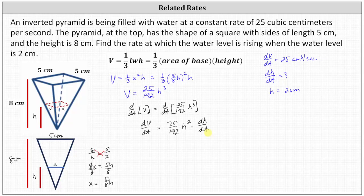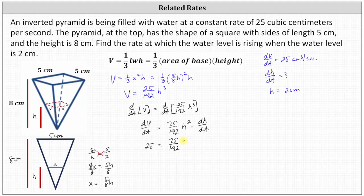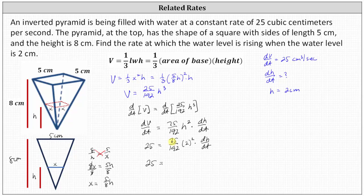We're solving for dh/dt when h equals two centimeters and dV/dt equals twenty-five cubic centimeters per second. Substituting twenty-five for dV/dt gives us twenty-five equals seventy-five over one hundred ninety-two times h squared — which is two squared — times dh/dt. We can simplify: two squared is four, four times seventy-five is three hundred, giving us three hundred over one hundred ninety-two times dh/dt.